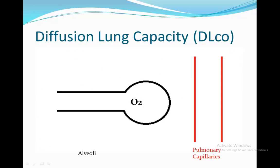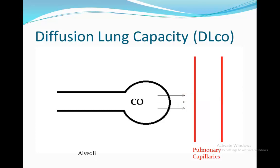Here we have the diffusion lung capacity. It's a test we do to see how much oxygen the lungs can diffuse into the bloodstream. As you can see, we have the alveoli — the site of gas exchange — and on the other side the pulmonary capillaries. The alveoli contain the breathed-in oxygen, and the pulmonary capillaries contain carbon dioxide. Oxygen moves from the alveoli to the capillaries, and carbon dioxide the other way. When testing diffusion lung capacity, we don't test with oxygen; instead, we use a trace amount of carbon monoxide due to its high affinity to haemoglobin.